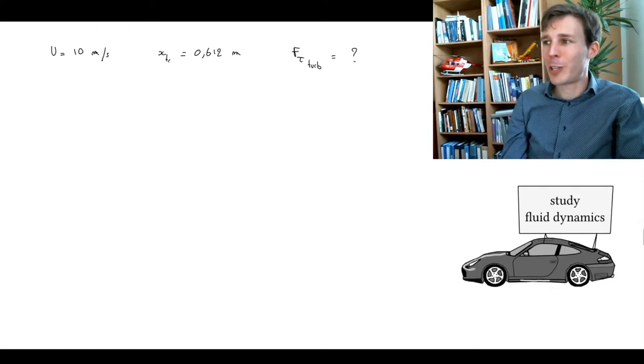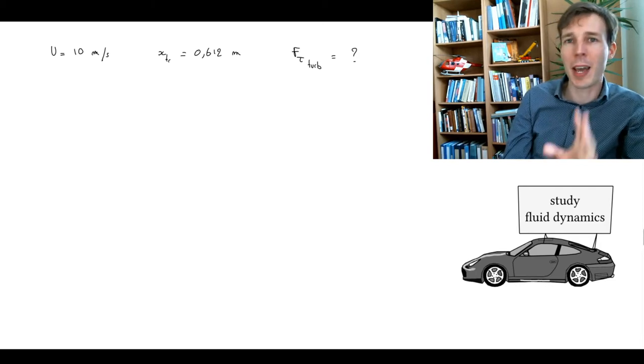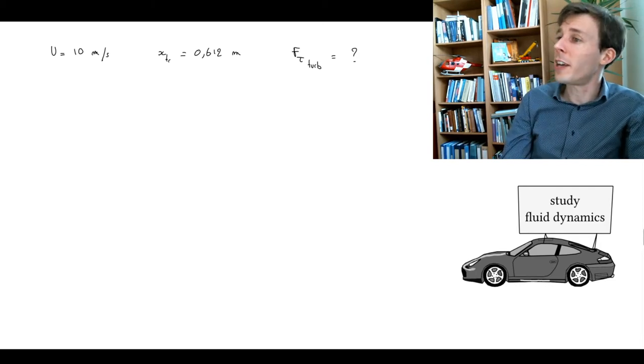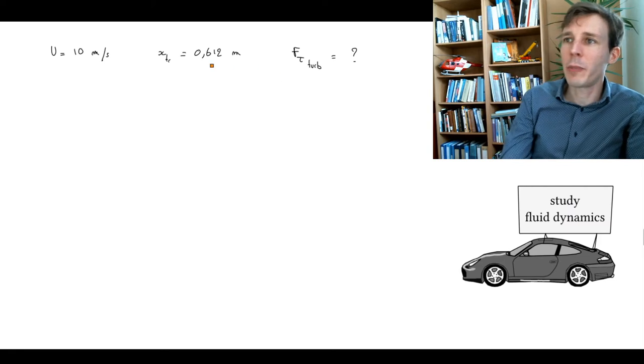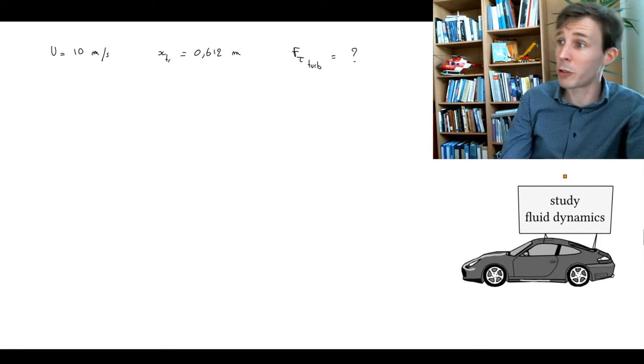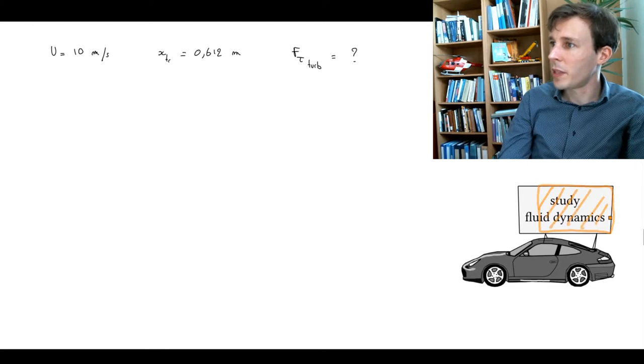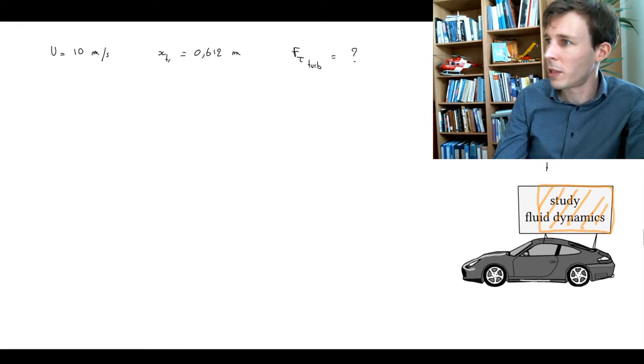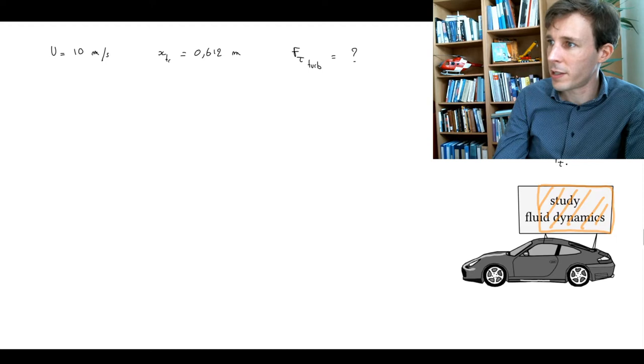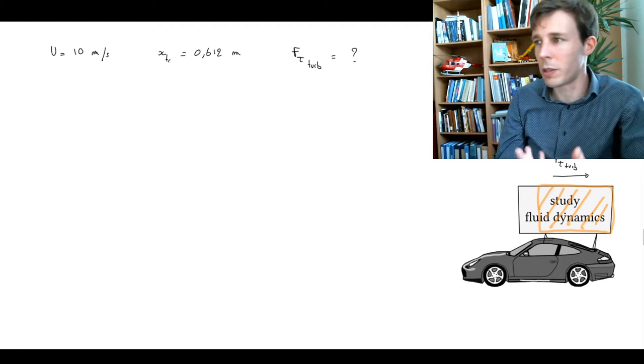In this problem we finish our calculation of shear forces exerted in the boundary layer on a flat plate. In particular, we're looking at the turbulent part of the boundary layer that has built up on this advertising board on this car. We calculated before that the transition occurs at about 60 centimeters downstream of the board, which means that this whole area here will feature a turbulent boundary layer. What we want to calculate is the force F_tau turbulent exerted due to shear on this turbulent part of the boundary layer.